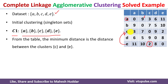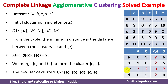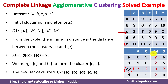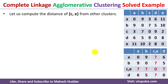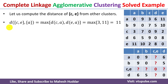Once you merge E with C, you get only one cluster. Previously we were having five clusters; after merging E to C we have only four clusters. We know the distance from C to all other data points and from E to all other data points, but we don't know the distance from CE to other data points like A, B, and D. So we need to calculate the distance from cluster CE to all other data points using the maximum distance formula.